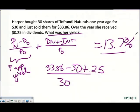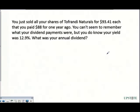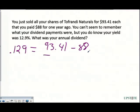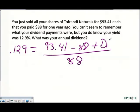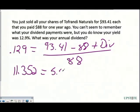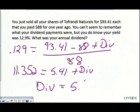In this next question we know the yield and need to find the dividend. Yield is 12.9% (0.129), the selling price was $93.41, and the purchase price was $88. So: 0.129 = (93.41 − 88 + dividend) / 88. Multiplying both sides by 88 gives 11.352 = 5.41 + dividend. Subtracting 5.41 gives a dividend of $5.94.